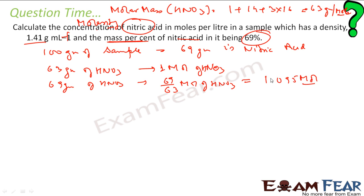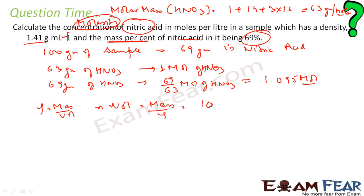Since I have 100 grams of sample in terms of mass, I have to find volume because I need molarity. Density equals mass divided by volume, so volume equals mass divided by density. Mass is 100 grams, divided by density 1.41 grams per milliliter — gram and gram cancel — giving 70.92 milliliters.